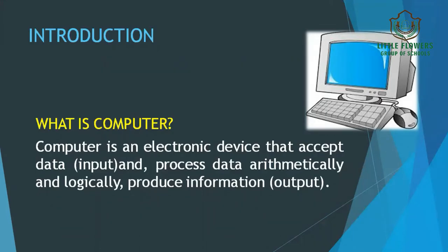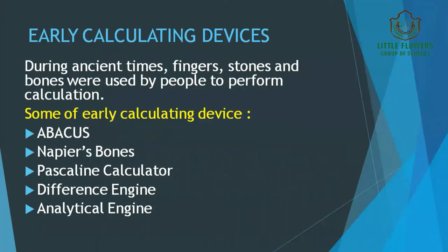Now we move further to the various early calculating devices. During ancient times, fingers, stones, and bones were used by people to perform calculations. Some of the early calculating devices are: first is the Abacus, then Napier's Bones, then the Pascaline Calculator, the Difference Engine, and the Analytical Engine.